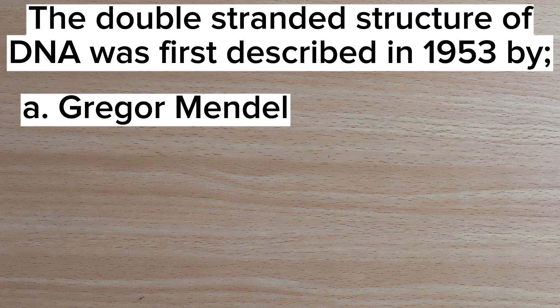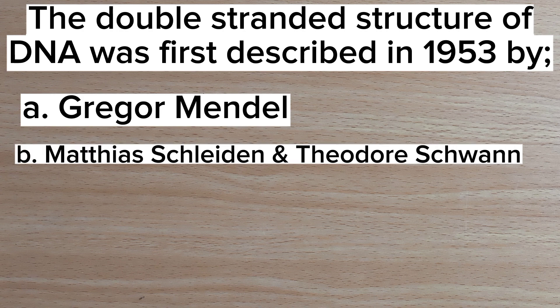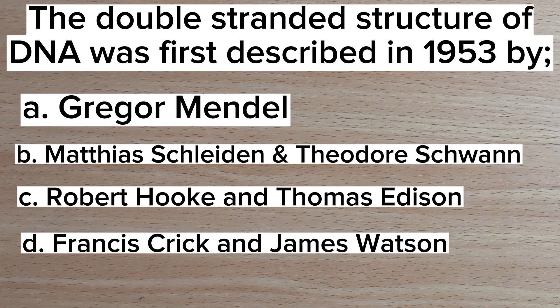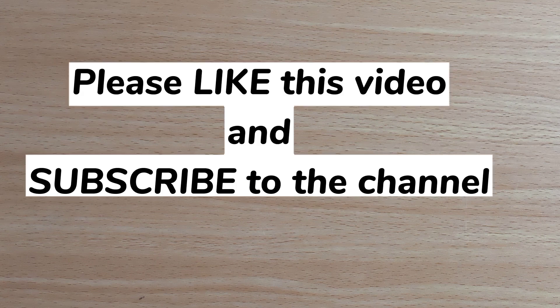Number fifteen: the double-stranded structure of DNA was first described in 1953 by — A. Gregor Mendel, B. Matthias Schleiden and Theodore Schwann, C. Robert Hooke and Thomas Edison, D. Francis Crick and James Watson. Answer: D. Francis Crick and James Watson.